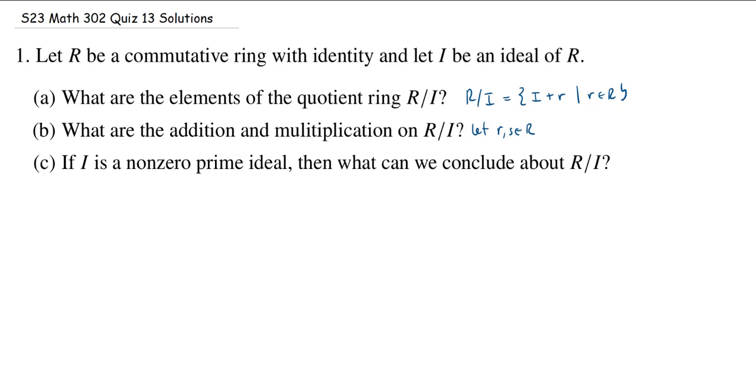These are going to be my translations. So I'm going to look at I plus R, and then I want to add I plus S. So I'm adding two of these translations together, and the way we define it is we just take the translation of I by the sum of R and S.